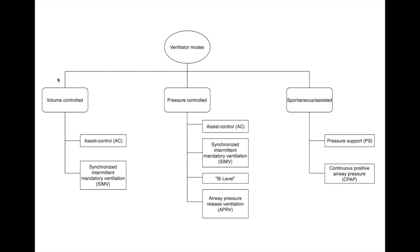Ventilator modes really come in three big buckets: volume controlled, pressure controlled, and spontaneous. That's the first thing you need to absolutely understand when managing a patient on the ventilator — is this patient on a volume, pressure, or spontaneous mode? These modes here are by far and away the most common. If you understand these modes — everything except maybe bi-level or APRV — you really understand 95-plus percent of the ventilator management occurring in an ICU.